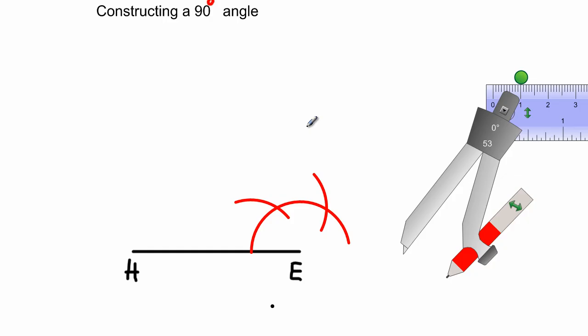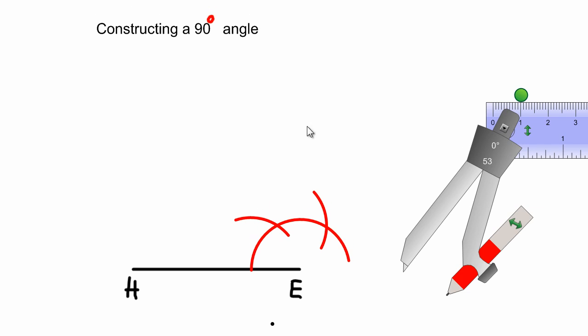So 60 plus 60 would give us 120. Now since I want to construct a 90 degree angle, let me just pull up this a bit. Now since my objective is to construct a 90 degree angle...